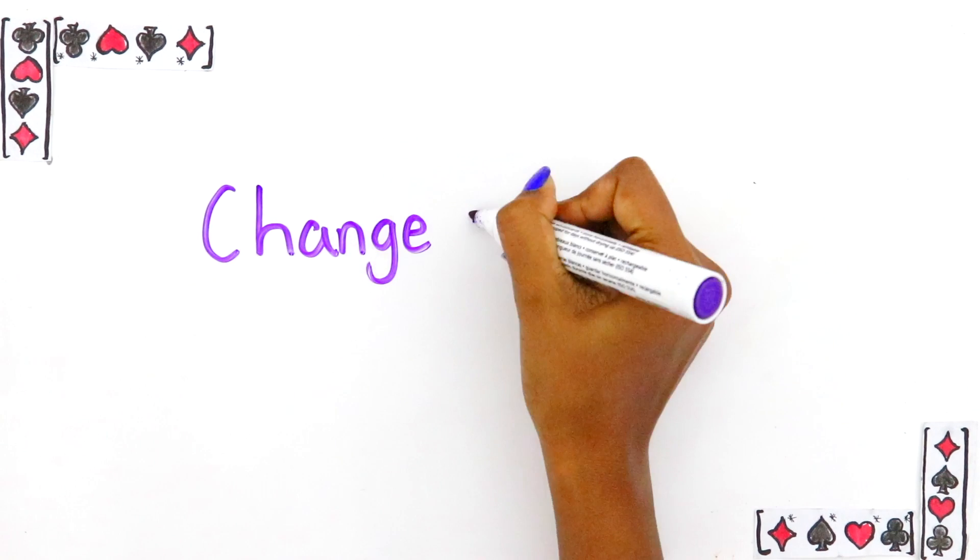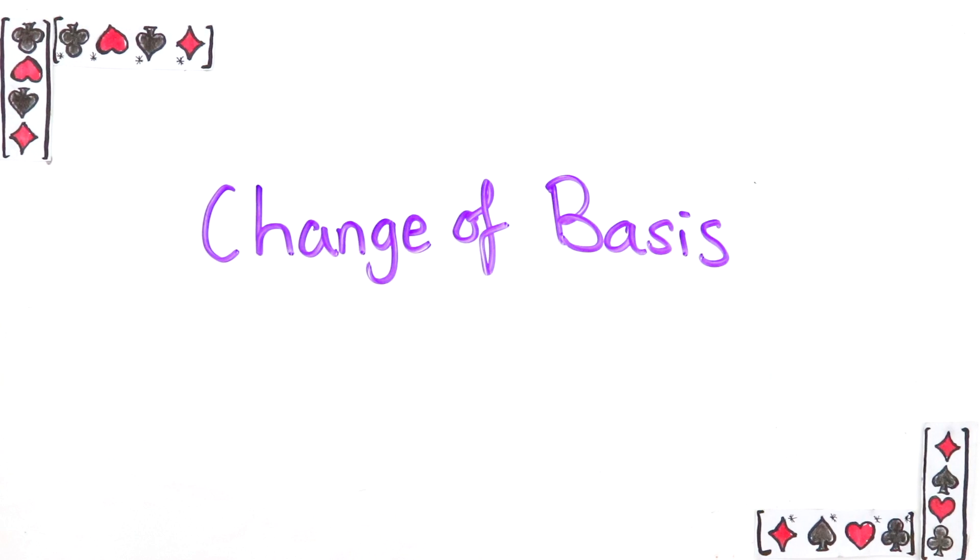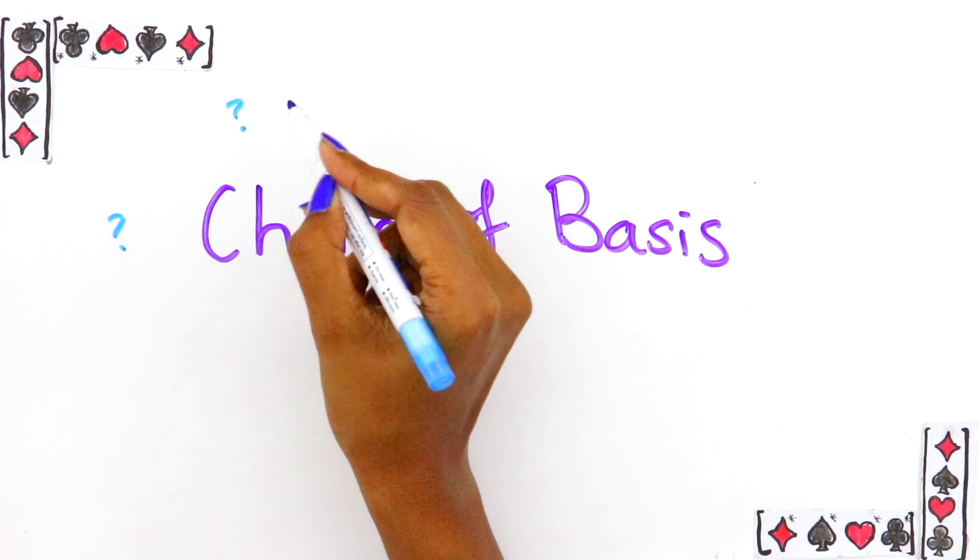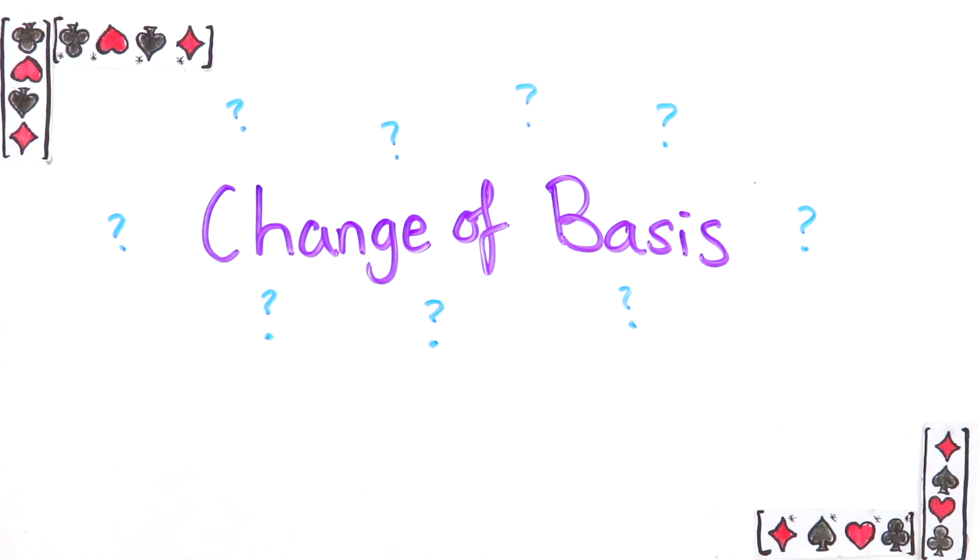Linear algebra courses often include a part about changing the basis of a vector or a matrix, and in my experience this part of the course can be a bit confusing, especially this mysterious change of basis formula they give you.